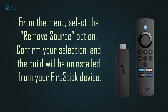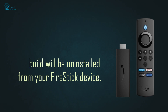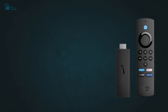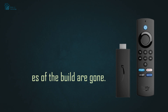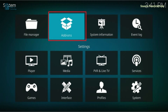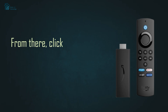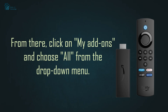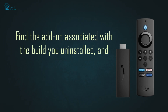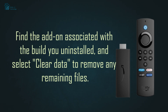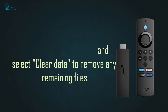Confirm your selection and the build will be uninstalled from your Fire Stick device. After removing the source, it's recommended to clear the Kodi data to ensure all traces of the build are gone. Go back to the Kodi settings page, select the add-ons option, click on my add-ons, and choose all from the drop-down menu. Find the add-on associated with the build you uninstalled and select clear data to remove any remaining files.